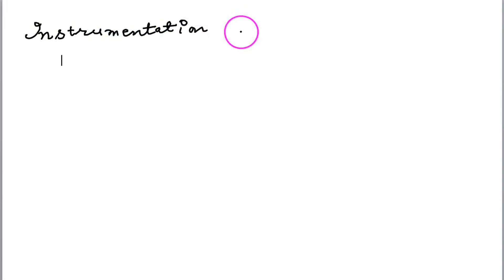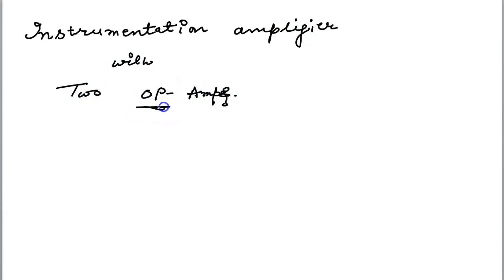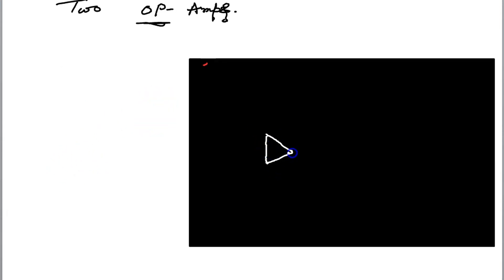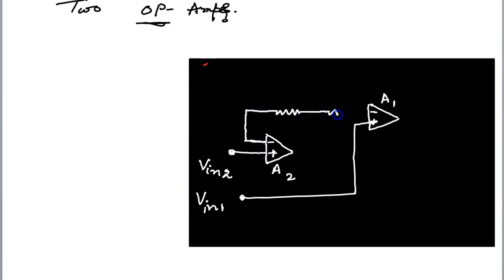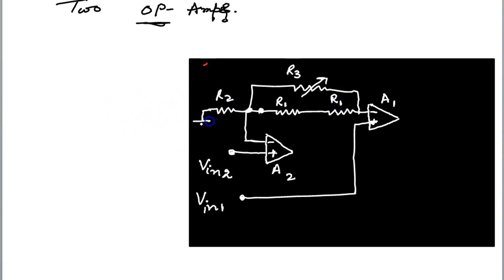Instrumentation amplifier using two operational amplifiers. There are two operational amplifiers: A1 and A2, each with inverting and non-inverting terminals. Input V1 is applied to the non-inverting terminal of A2, and V2 is applied to the non-inverting terminal of A1. The inverting terminal of A1 is connected to the inverting terminal of A2 through resistors R3 (variable) and R1.